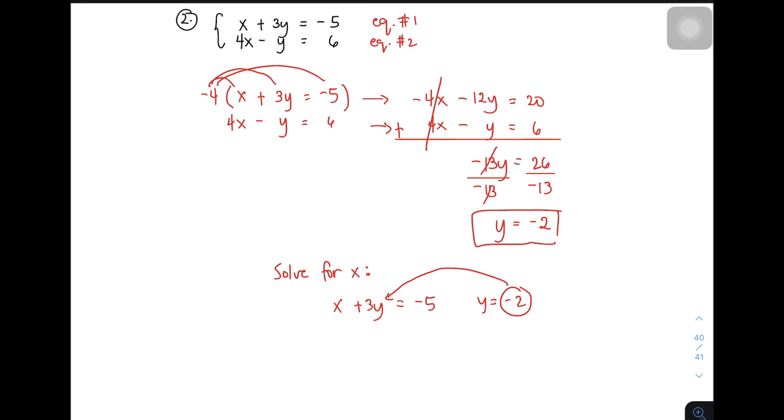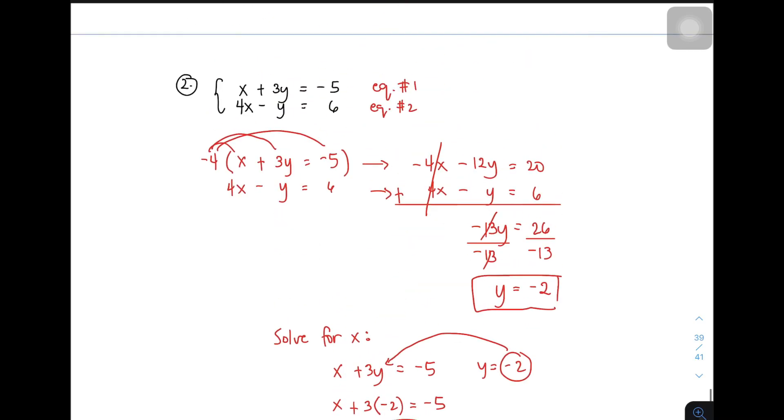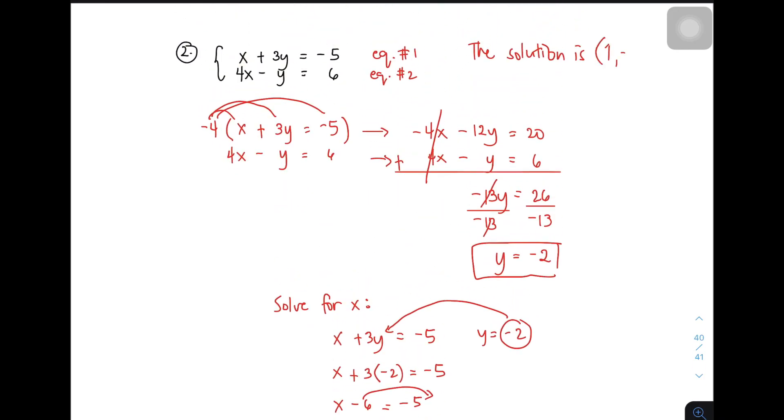I will be using equation number 1. x plus 3y equals negative 5. Remember, your y equals negative 2. Ipapalit natin yung negative 2 sa variable y. You have x plus 3 times negative 2 equals negative 5. x minus 6, because 3 times negative 2 is negative 6, equals negative 5. Transpose negative 6 to the other side. x equals negative 5 plus 6. x equals 1. This is the value of x. The solution is 1 comma negative 2. That's it for example number 2.